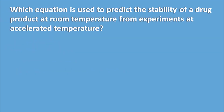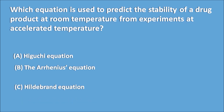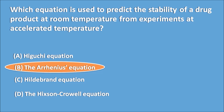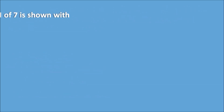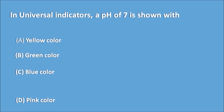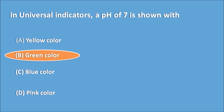Which equation is used to predict the stability of a drug product at room temperature from accelerated temperature experiments? Options: (a) Higuchi equation, (b) Higuchi equation, (c) Heilbrand equation, (d) Hixson-Crowell equation. Answer: The Arrhenius equation is used for accelerated stability studies. In a universal indicator, pH 7 is shown with which color? Options: (a) Yellow, (b) Green, (c) Blue, (d) Pink. Answer: Green corresponds to pH 7.